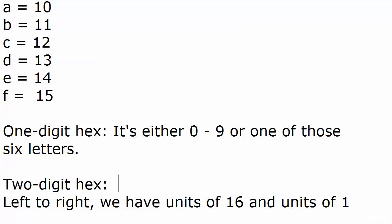Now with two-digit hex, left to right, you have units of 16 and units of one. If you want to go from right to left and say units of one and then 16 times one, which is 16, that's fine. I just think it's easier just to remember left to right. We got units of 16 and units of one.